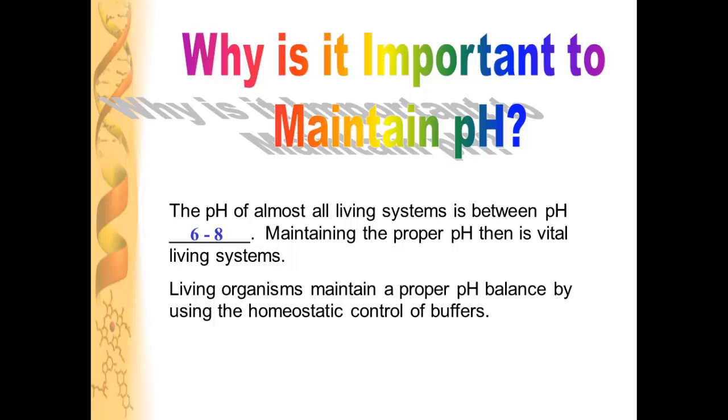And there's various other things that will happen to your body if the pH is off balance. And so your body likes to maintain a pH between 6 and 8. And how it does that is through a process called homeostasis.